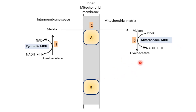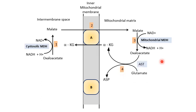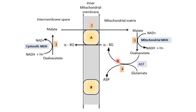Now this oxaloacetate is impermeable to the inner mitochondrial membrane. So this oxaloacetate will undergo a transamination reaction with the help of glutamate and will be converted to aspartate with the help of the mitochondrial aspartate aminotransferase enzyme, which also requires PLP — the coenzyme of vitamin B6 — as a coenzyme.